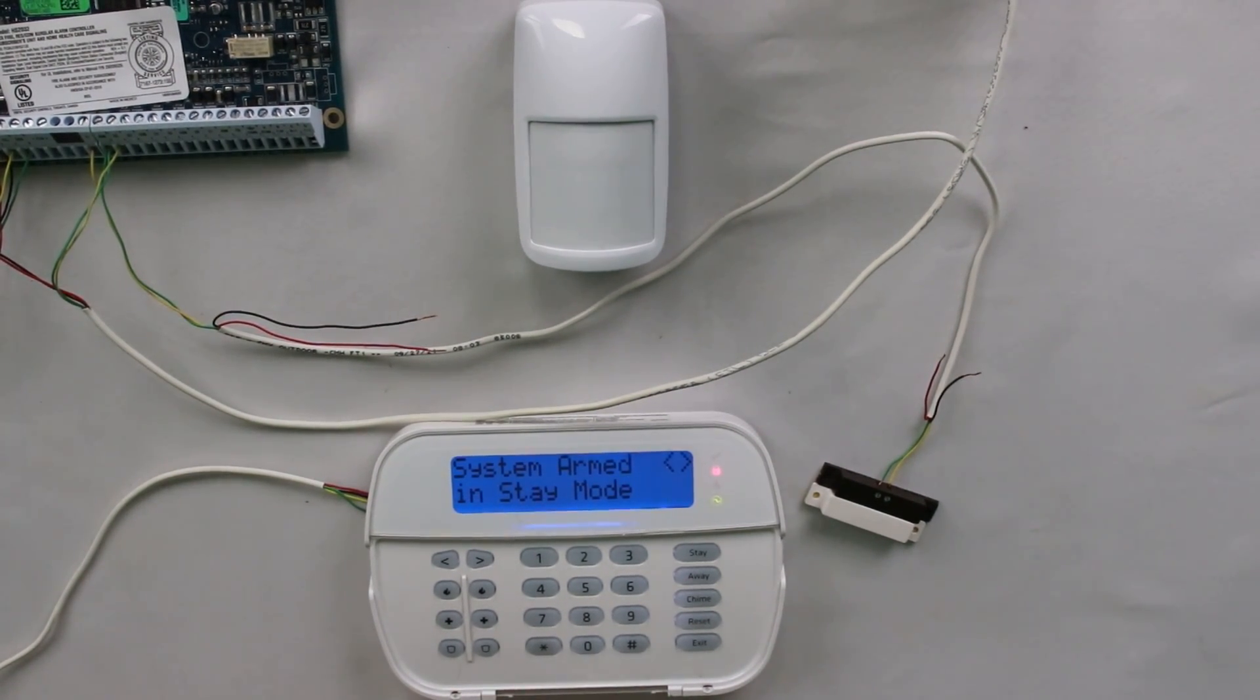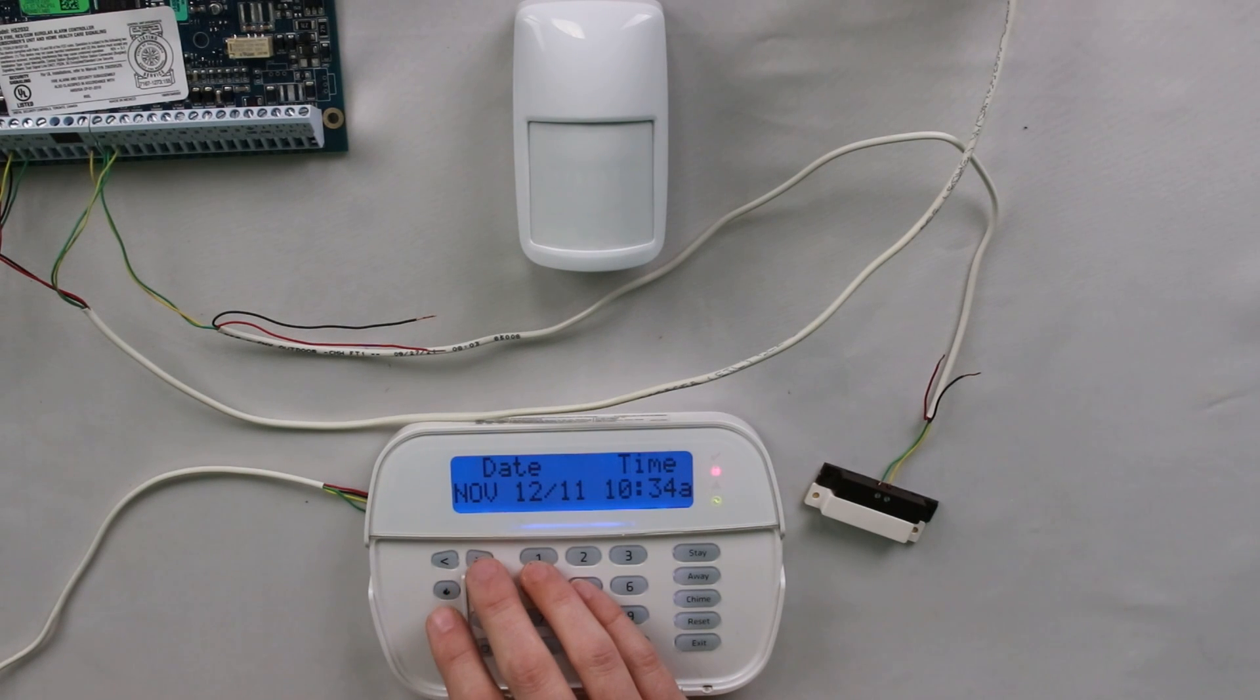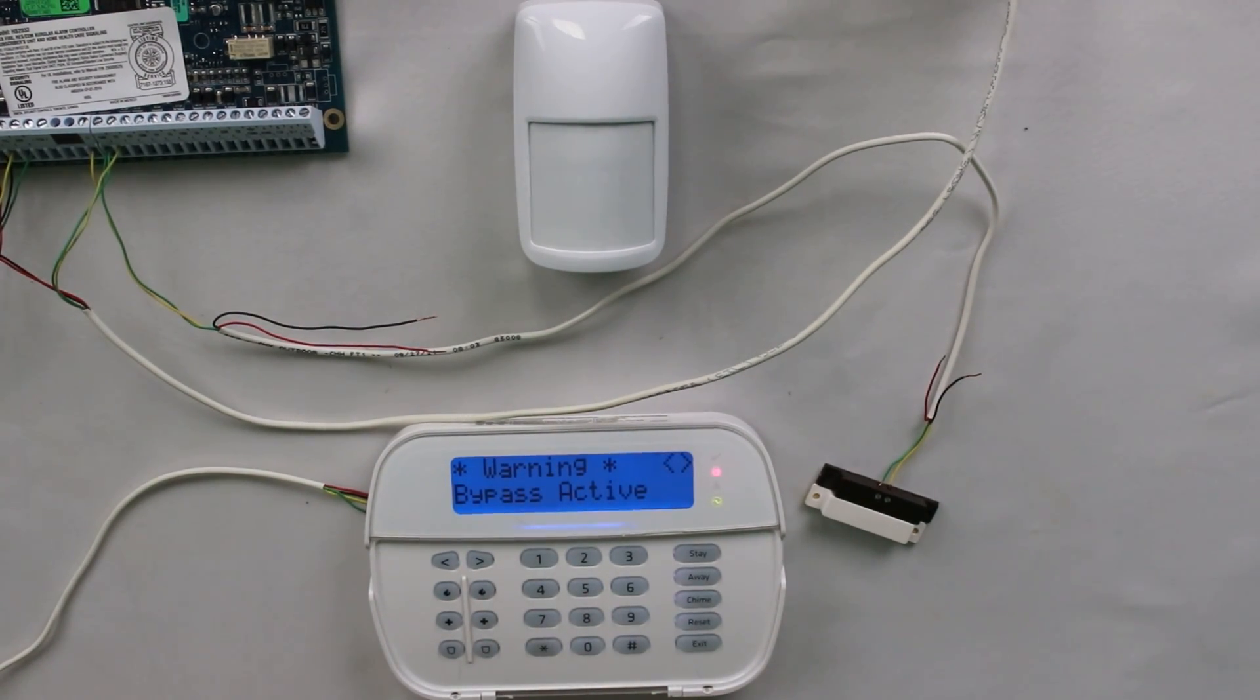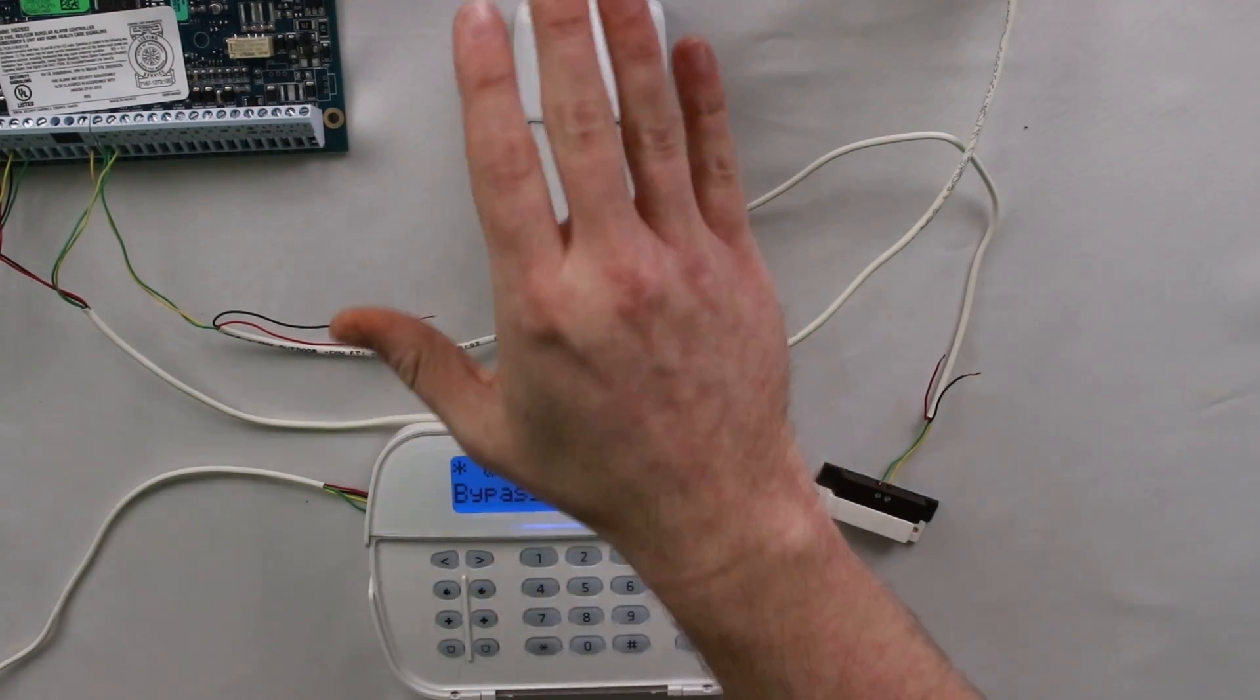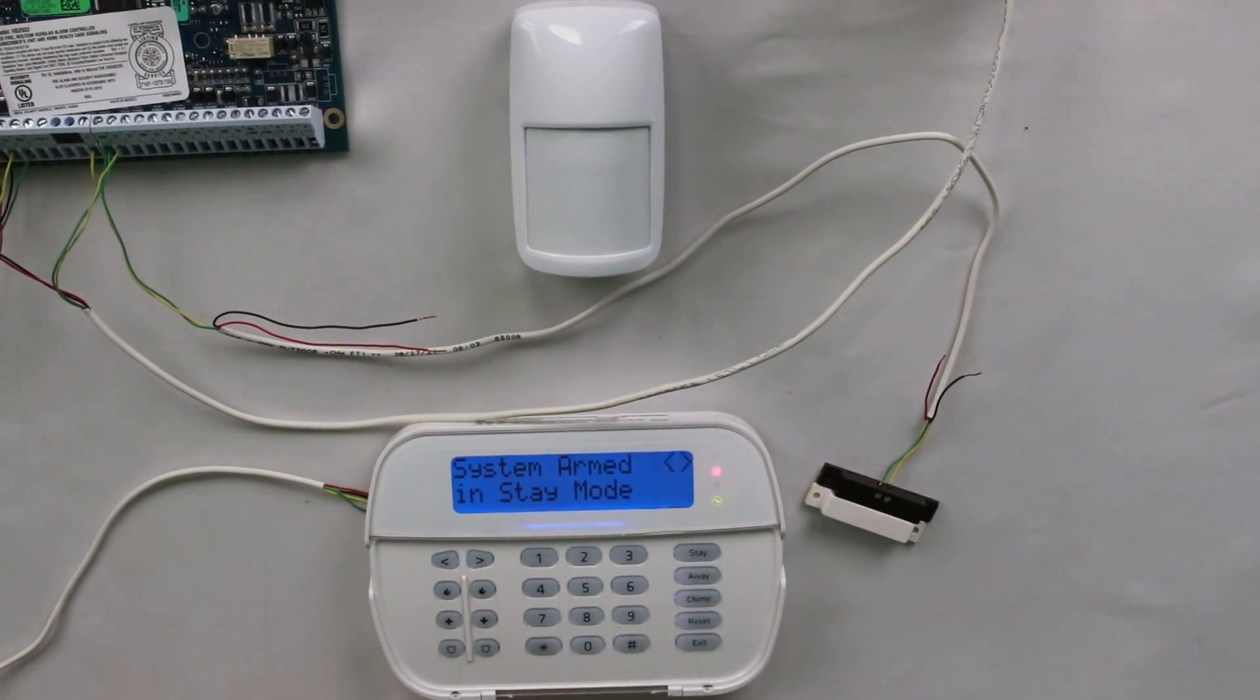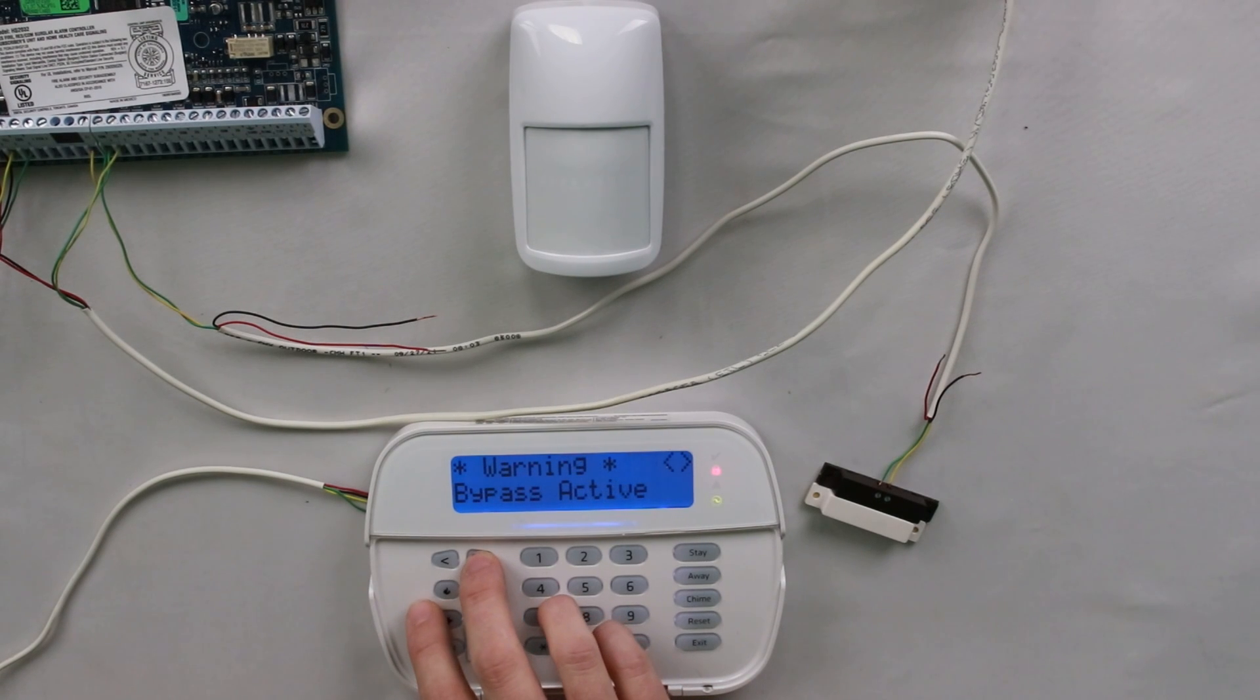So when it first arms, it is going to tell you system armed in stay mode. It will always tell you whatever arming method it is in after it is armed. So now if we scroll to the right, it is still going to say warning bypass active. And that is because it's telling you that motion or your stay away zones are bypassed currently. And as you can see, I set off that motion and it didn't trigger the system.